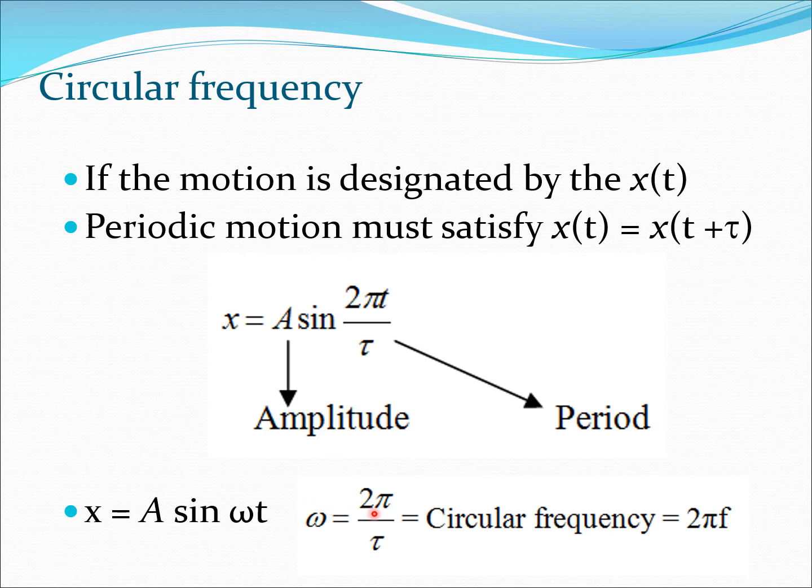So we will compute the circular frequency and essentially it comes out as 2π by tau. So using this we can write x is A sine ωt. So this essentially represents the simple harmonic motion in its simplest form. Now here you can also see that the circular frequency can be written as 2πf because f is 1 by tau.